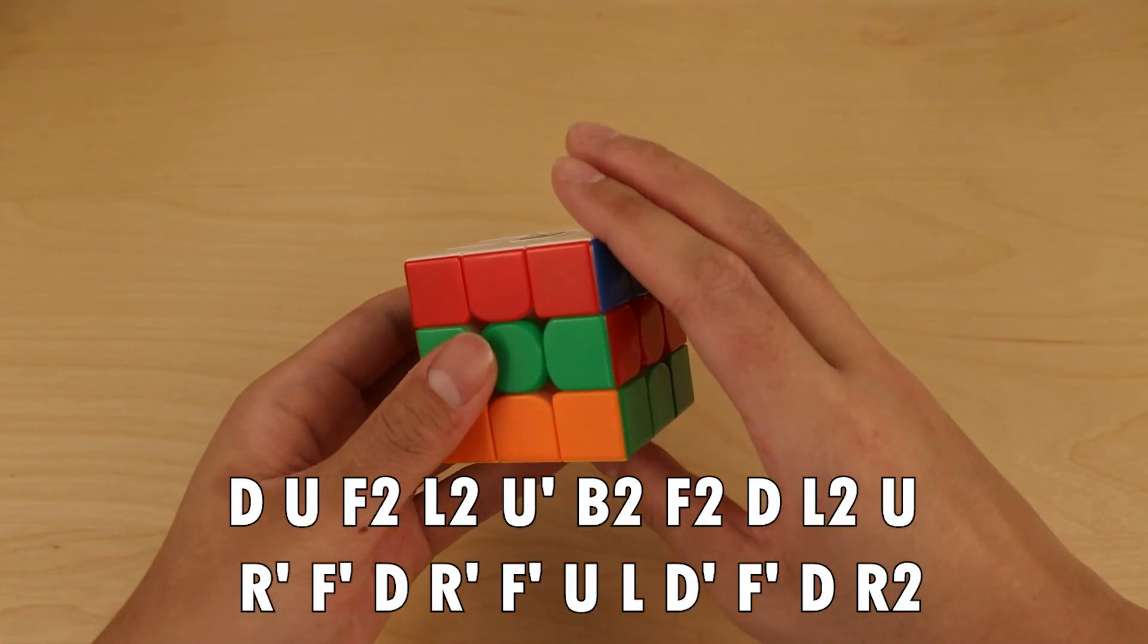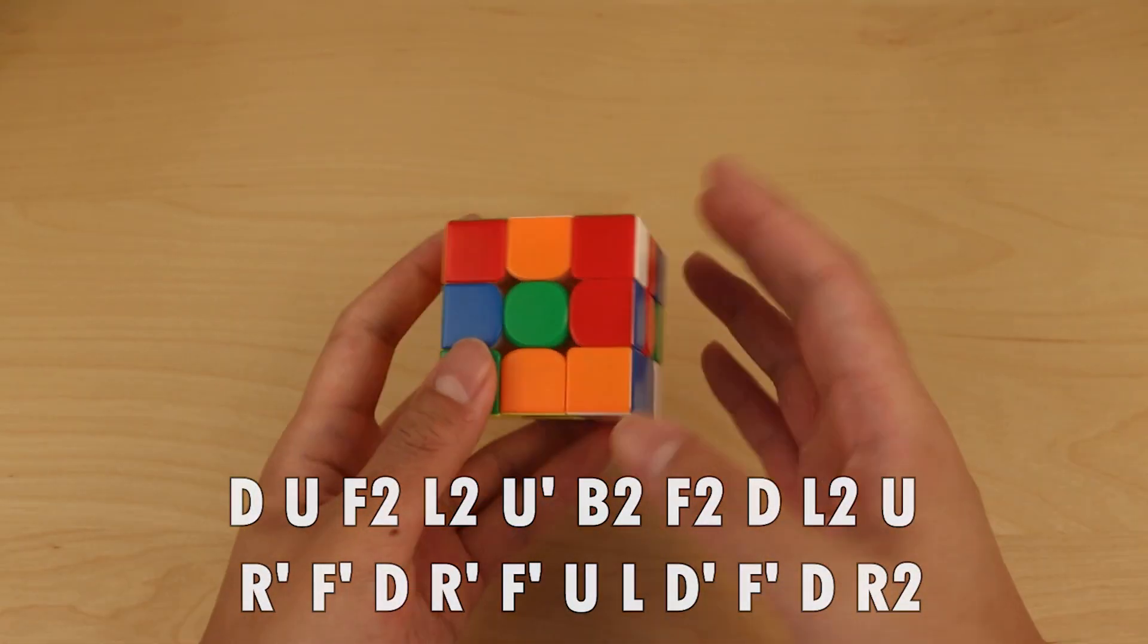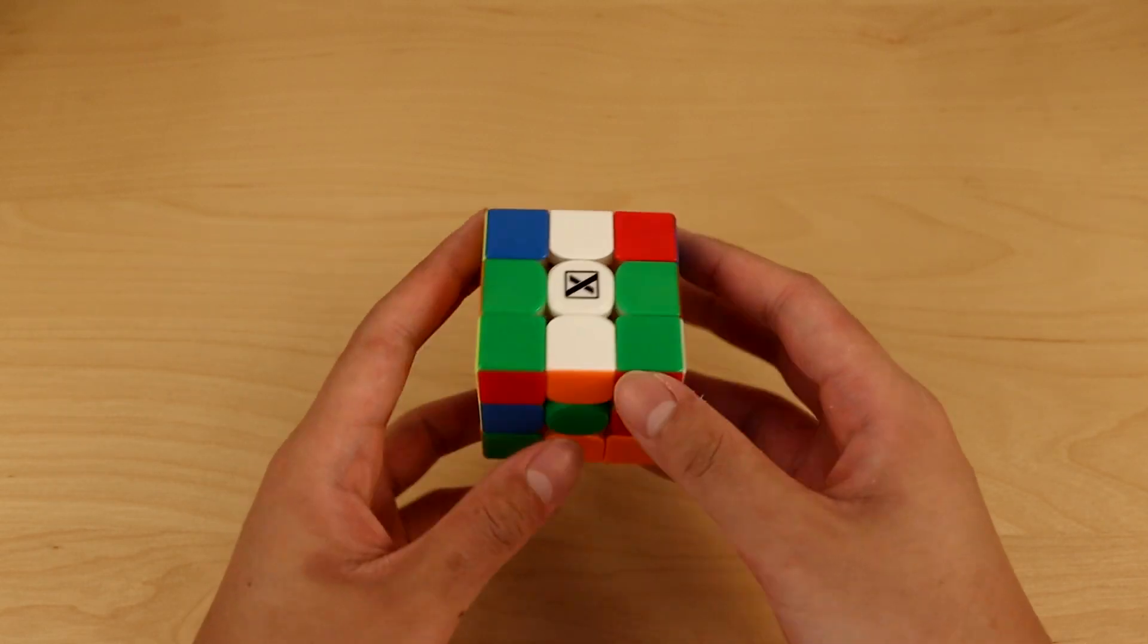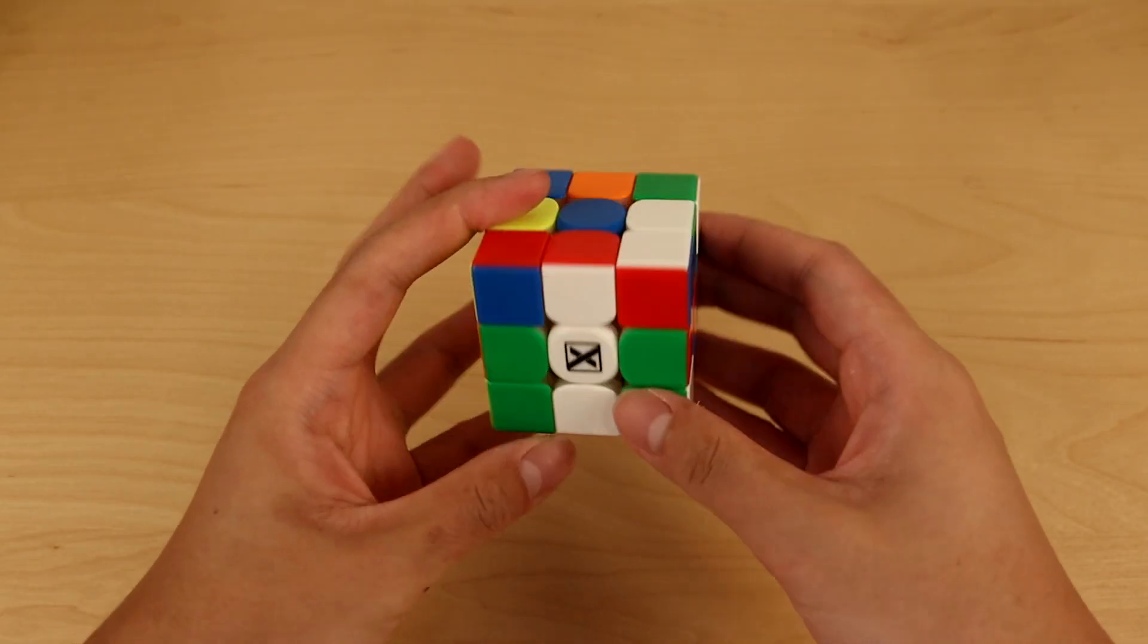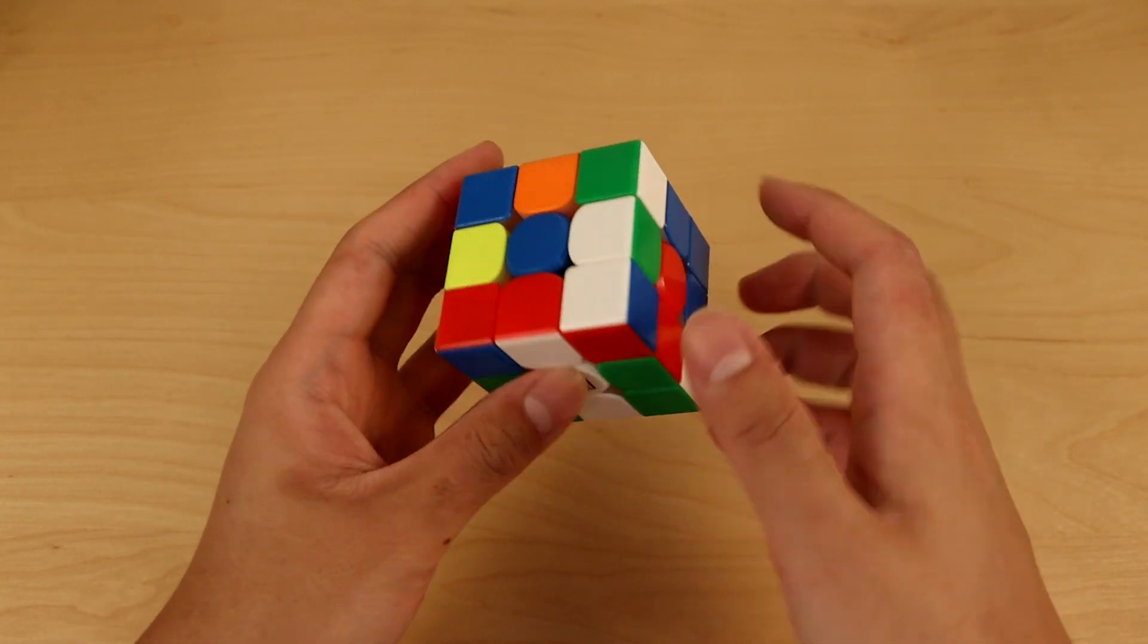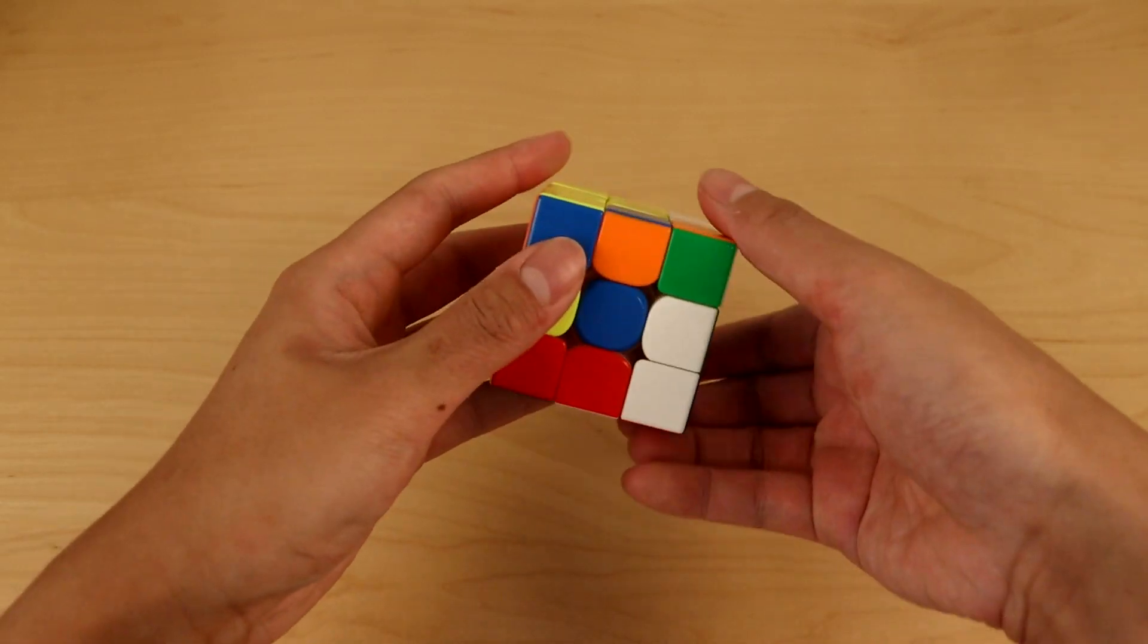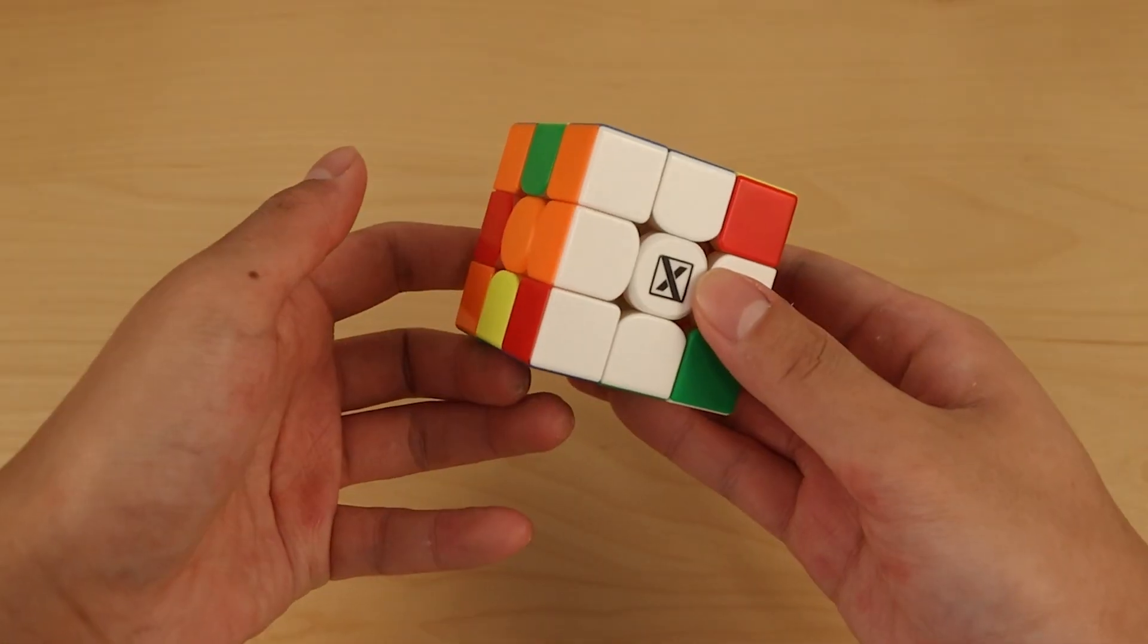Here's the scramble if you want to try it out. Immediately we see a lot of lines which is great for crosses, but the best color has to be white. These two pieces are already in place. This is one move from being solved, and this is also pretty much one move from being solved. So already we have a four-move cross which is really nice.